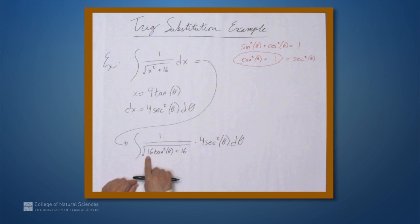So, first step here, we can factor out this 16. This becomes the integral of 1 over the square root of 16 times the square root of what's left, which is tangent squared theta plus 1. And tangent squared theta plus 1 equals secant squared theta. So this is secant squared theta under the square root times 4 secant squared theta d theta.